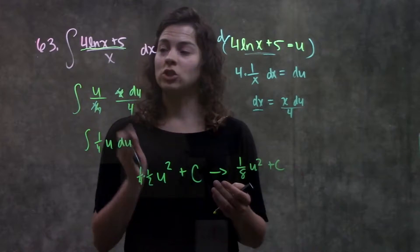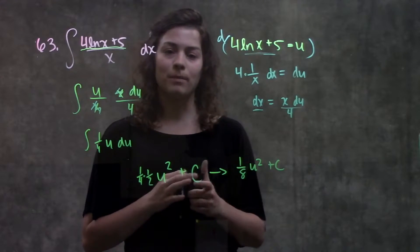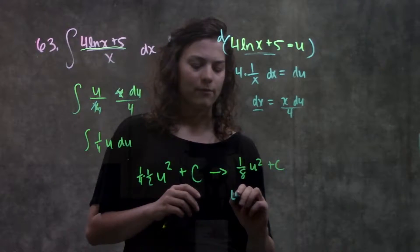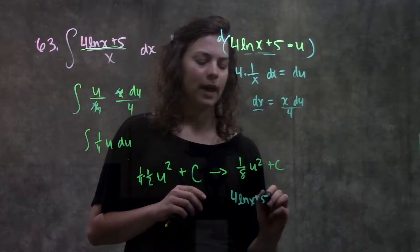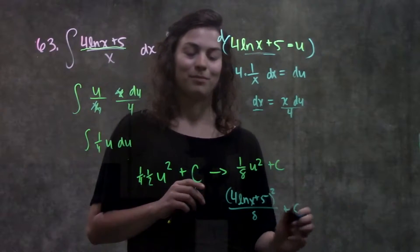But remember, I want my answer in terms of the variable I started with. So I'm going to plug in this original part in for my u, and I get as my final answer, I have 4 ln x plus 5, all that squared, over 8 plus c.